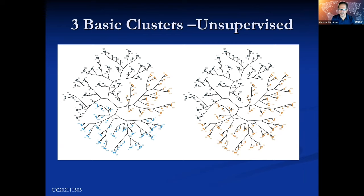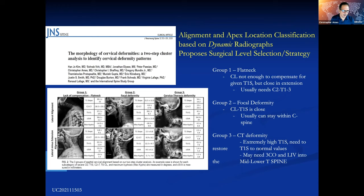Just like we brought AI and unsupervised learning into our thoracolumbar classification, we've also brought unsupervised learning into our cervical deformity classification. This is work done by Virginie LaFage and Hanjo Kim at HSS. Essentially what the AI told us — when they took an independent pattern recognition look at our cervical deformity database — was that the computer identified basically three types of cervical deformity. One is flat neck, where the cervical lordosis is not enough to compensate for the T1 slope but does so in extension. Another is the focal deformity group in the cervical spine, who can often get by with just a cervical fusion.